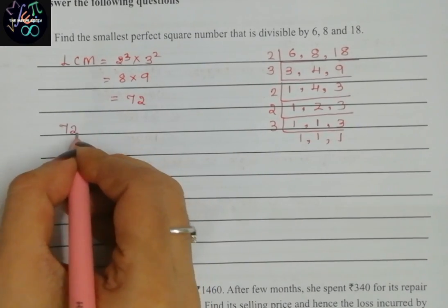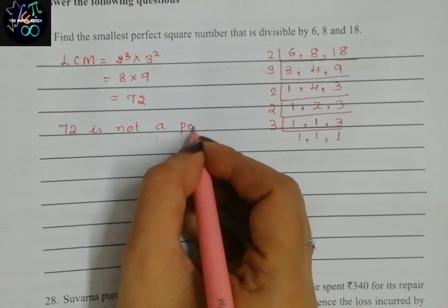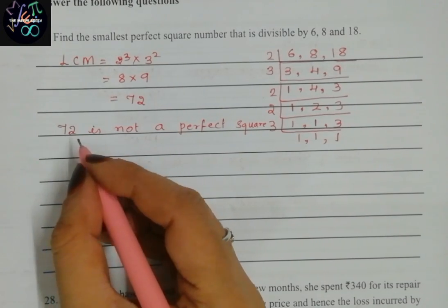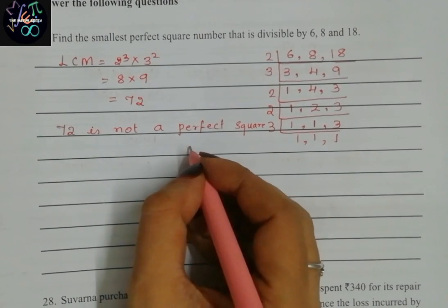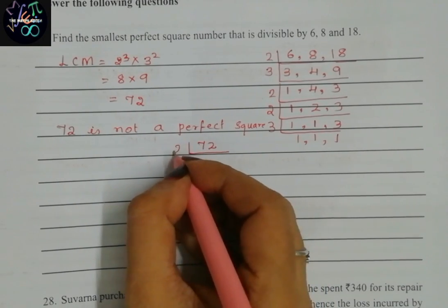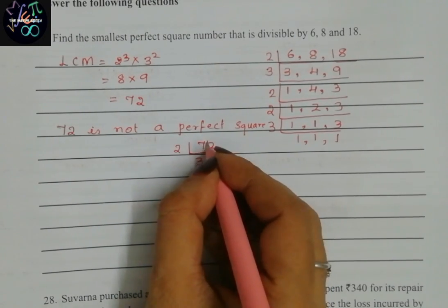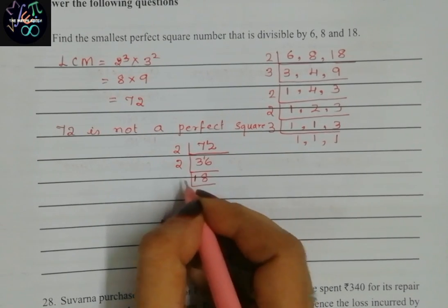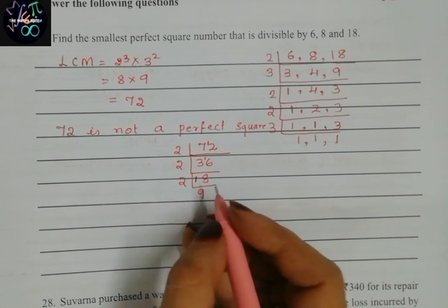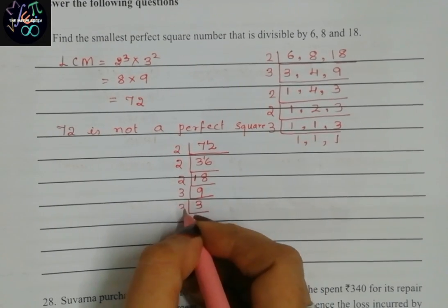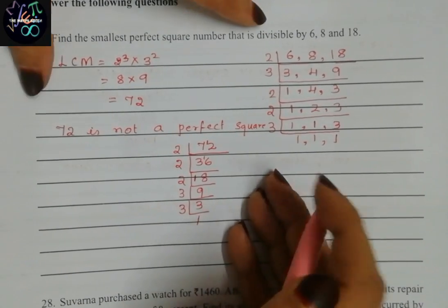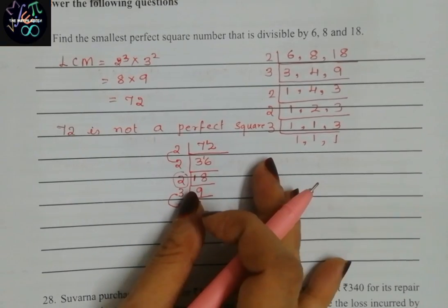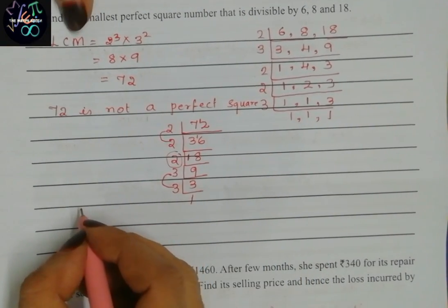But it is not a perfect square. What we will write? 72 is not a perfect square, because in the question they have asked for a perfect square. So let us see what should be multiplied to 72 to get a perfect square. I will take the factors of 72: 2 goes into 6, then 12, then 2, 8, 16, 18, 36, then 3 table for 9. We know perfect square means pairs of 2, so one more 2 we need to get a perfect square.